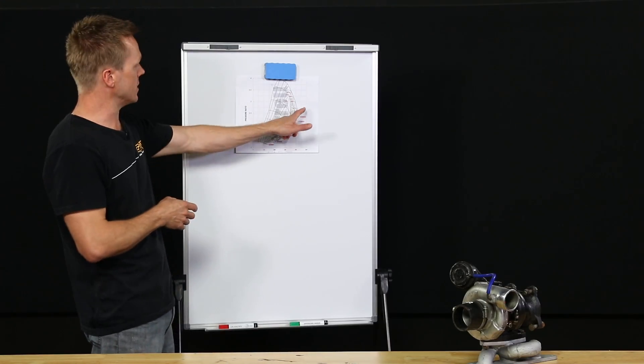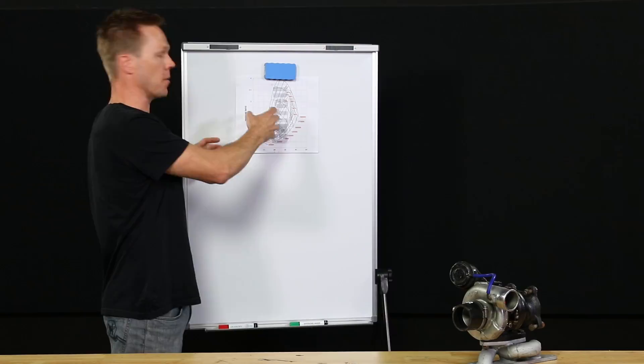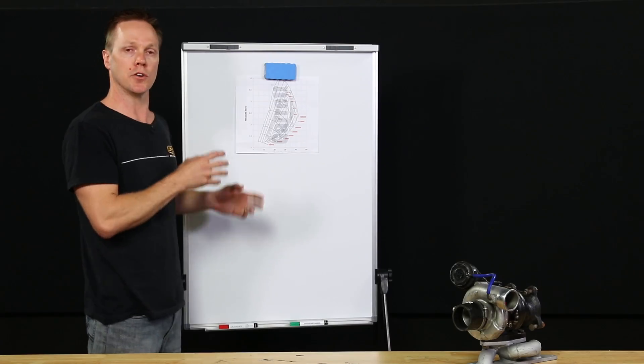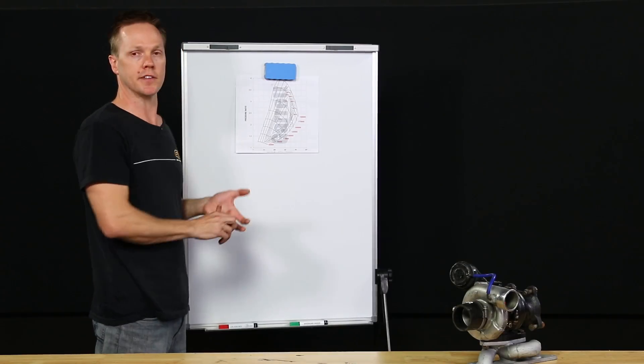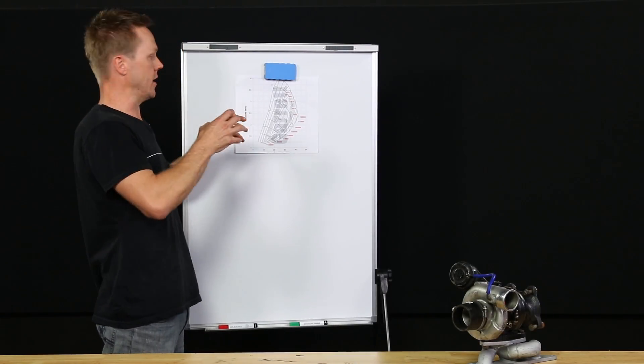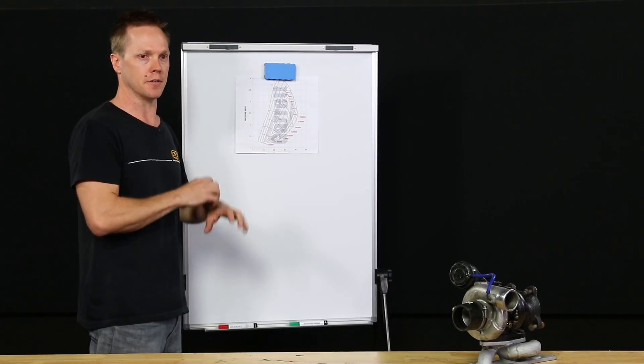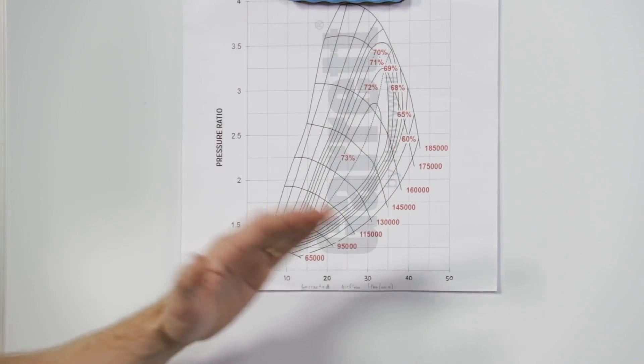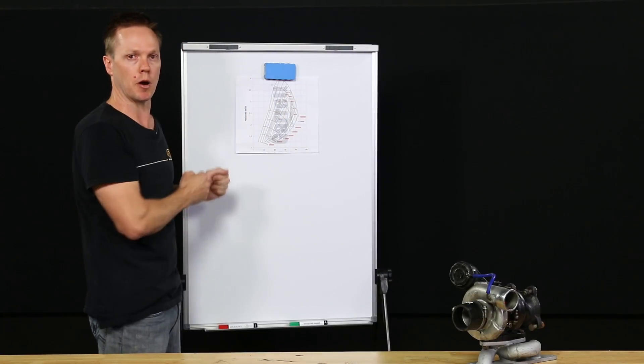The next one to look at is the choke line. Now this basically represents the maximum operating conditions of the turbo. You really don't want to be operating out here because all you're going to do is make heat and spin the turbo faster than it needs to be and cause it to wear out faster and all sorts of bad things will happen. So these lines here represent the boundaries of where you want to operate your turbo.